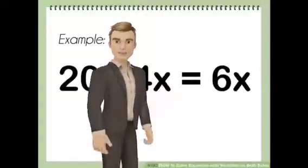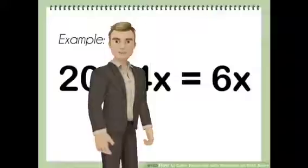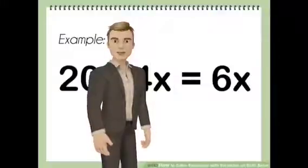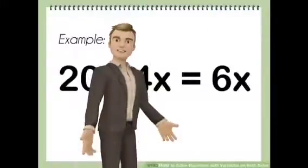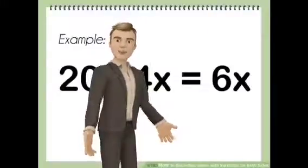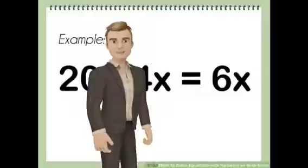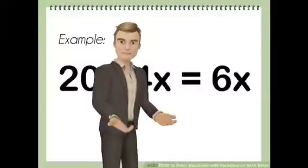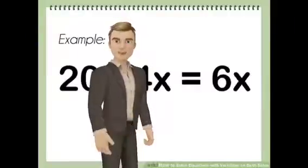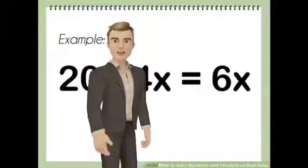So, in this case, the equation is 20 minus 4x equals 6x. The variables would be x in the letters 4 and 6.